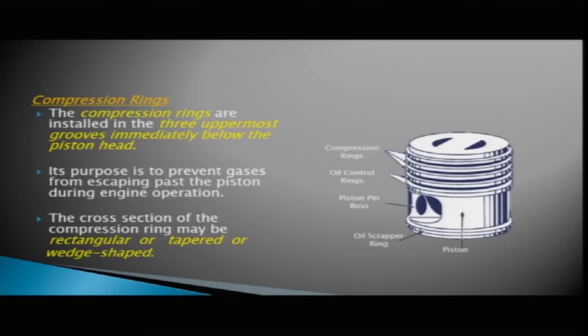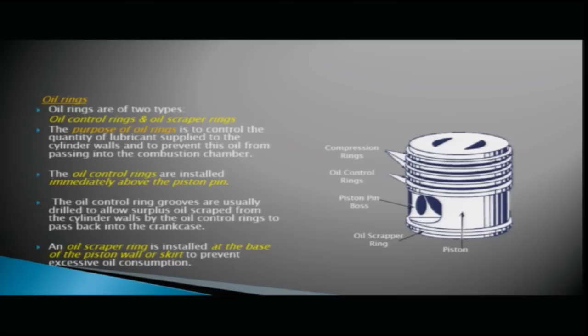Coming to oil rings: the first three grooves below the piston head have compression rings, and below those are the oil control rings. The oil rings are of two types: oil control rings and oil scraper rings. The purpose of the oil ring is to control the quantity of lubricant supplied to the cylinder walls and to prevent oil from passing into the combustion chamber.